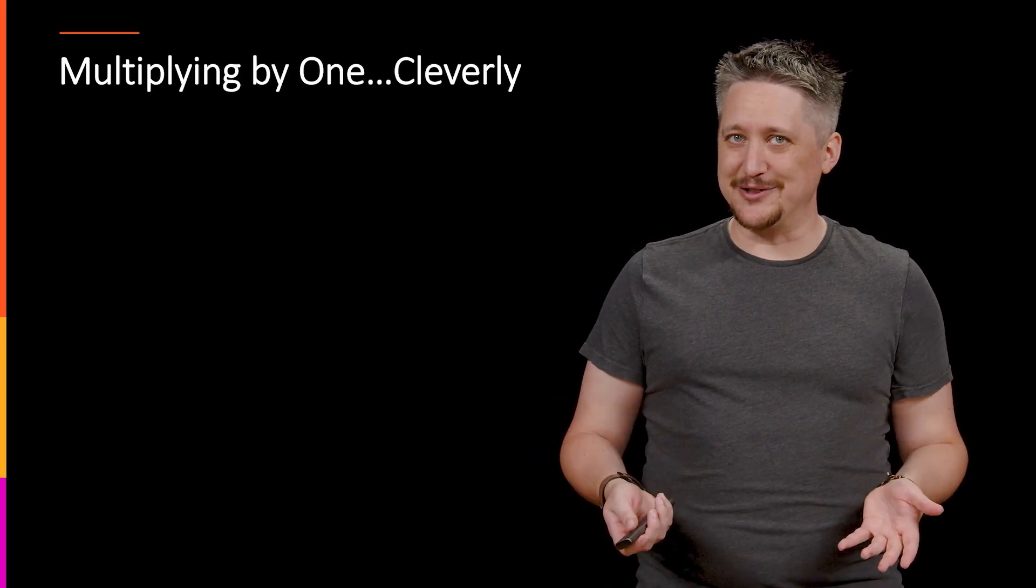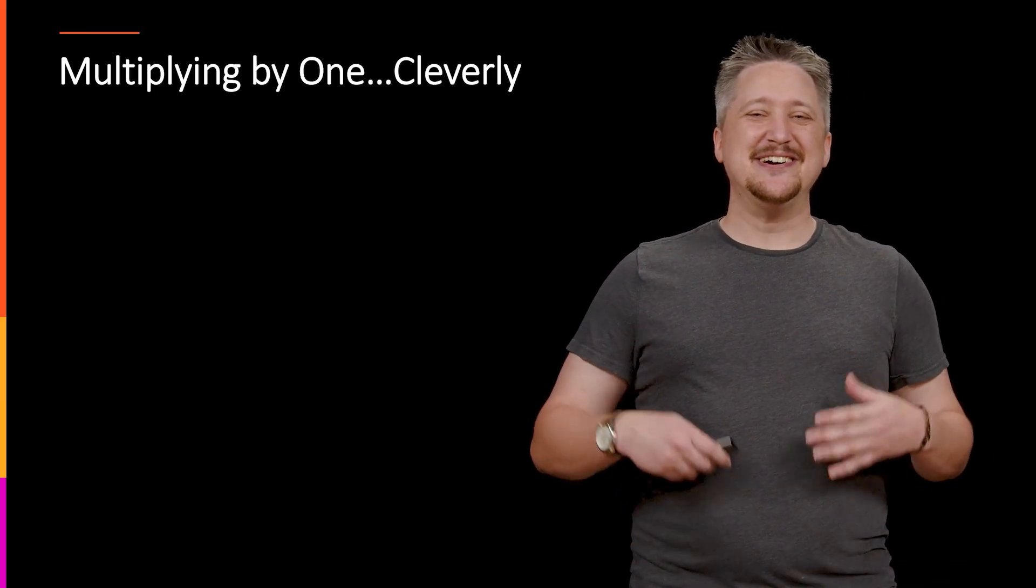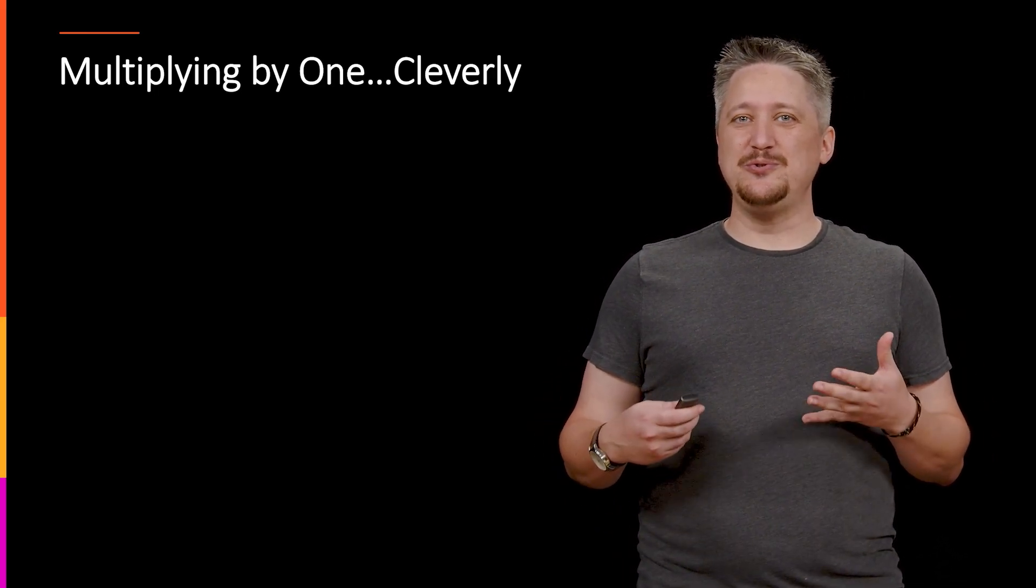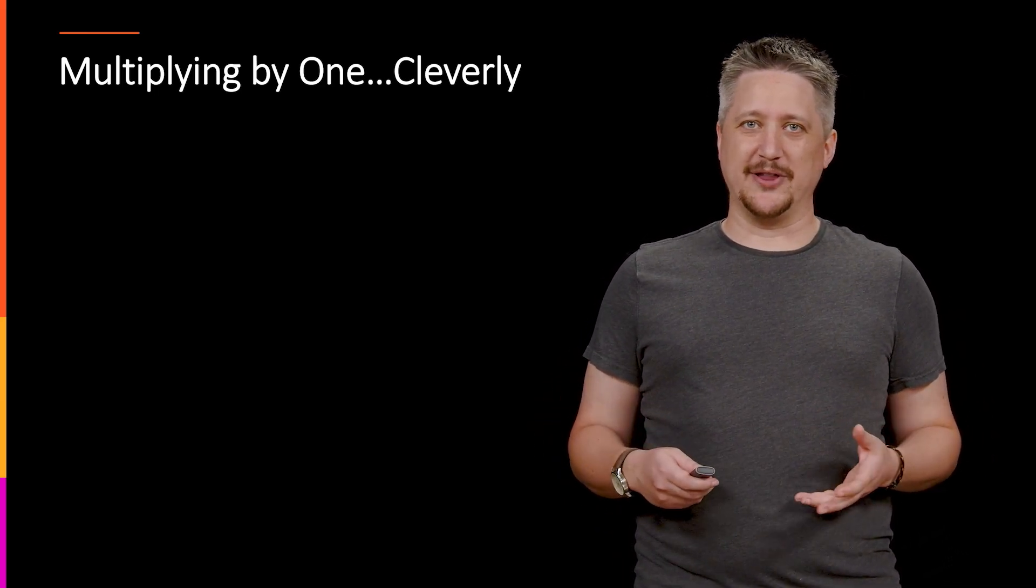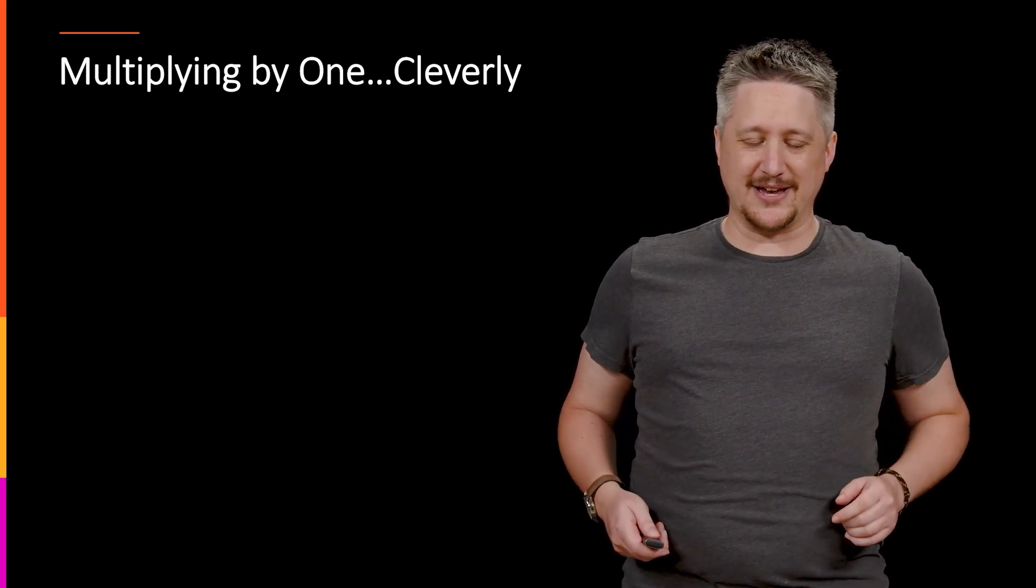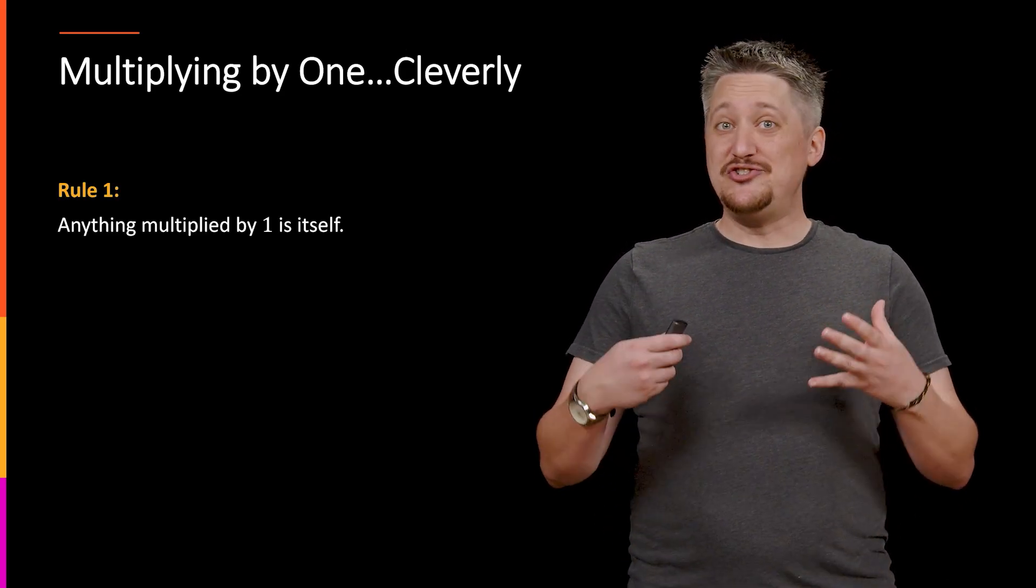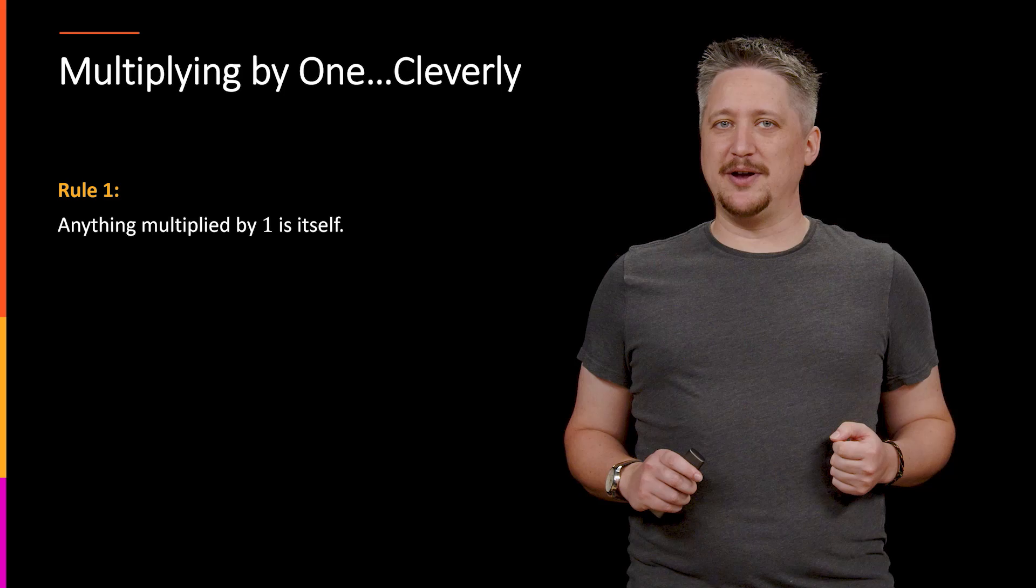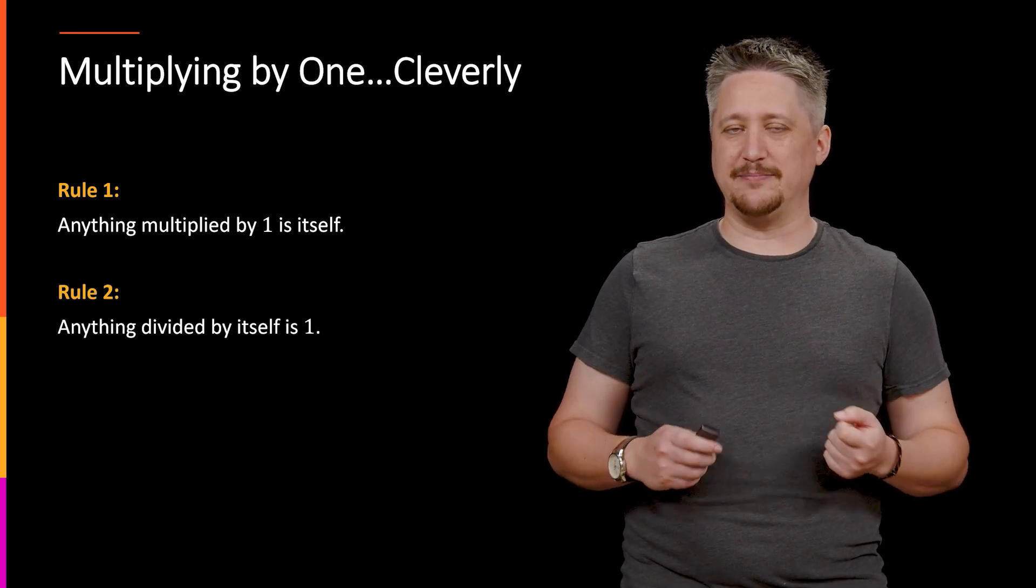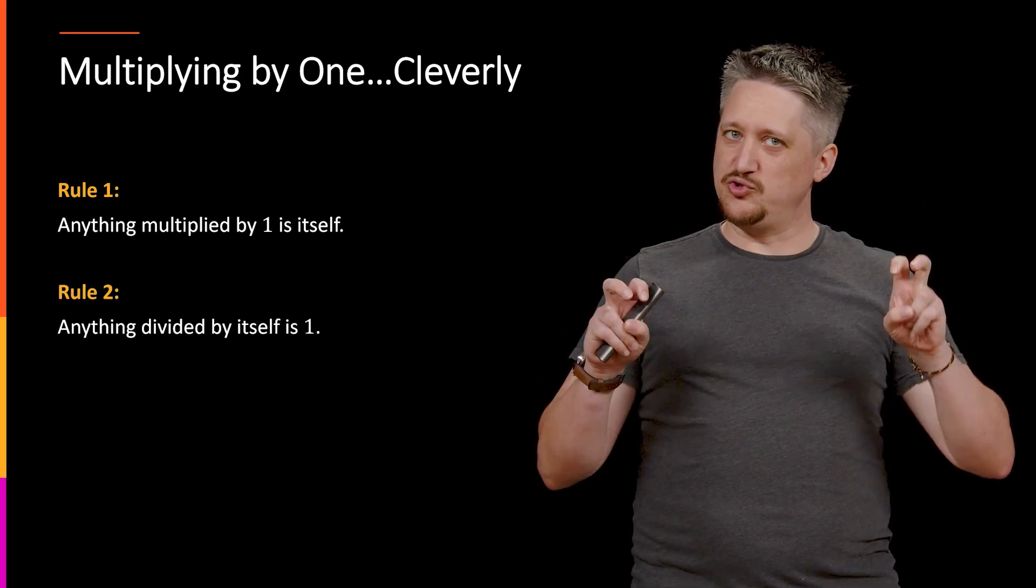So to start off with, multiplying by 1 cleverly. As we know, there's two rules which as it turns out are blatant lies but we won't find out about that until calculus. Generally speaking, anything multiplied by 1 is itself and anything divided by itself is 1.